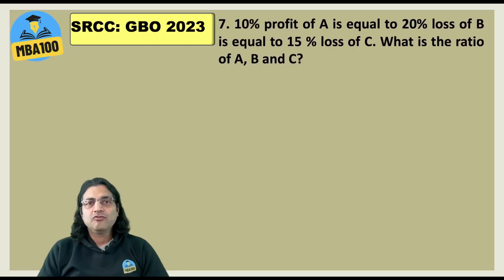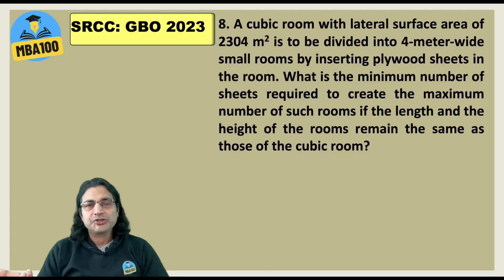What about this one? Here they tried to trap you by putting terms like profit and loss. Actually the question is 10% of A is equal to 20% of B is equal to 15% of C and that gives the answer as 6 is to 3 is to 4. What about this one? If you read it I'm sure you will get the answer. That is 5.